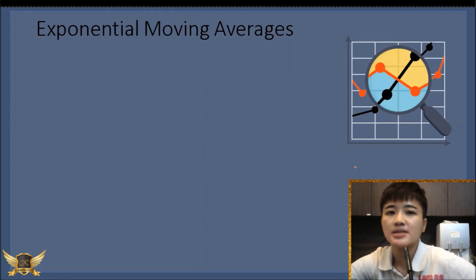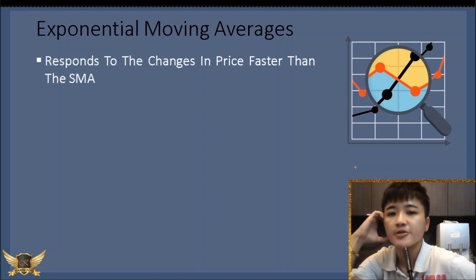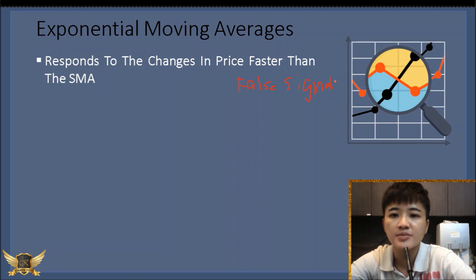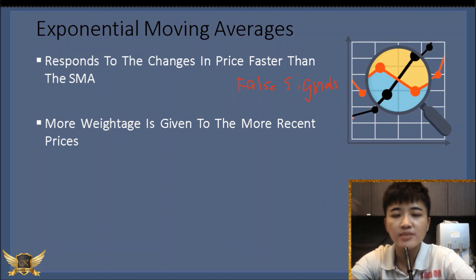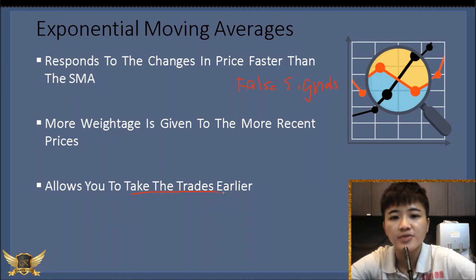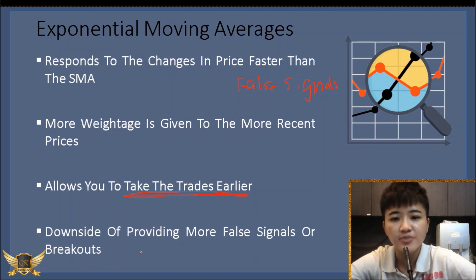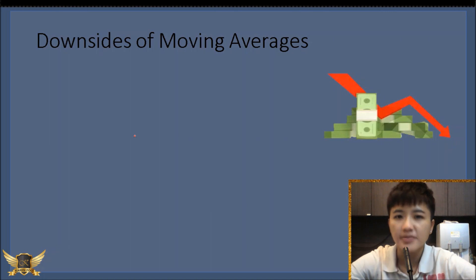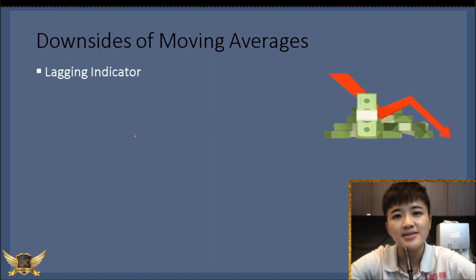The next type is the exponential moving average, or EMA. It responds faster to changes in price, which means less lagging, but the downside is it produces a lot more false signals. The good thing about EMA is it gives more weightage to the more recent prices rather than equal weightage to every price. Because it responds faster it allows you to take trades earlier, but it also provides a lot more false breakouts — so be careful not to rely on moving average alone.